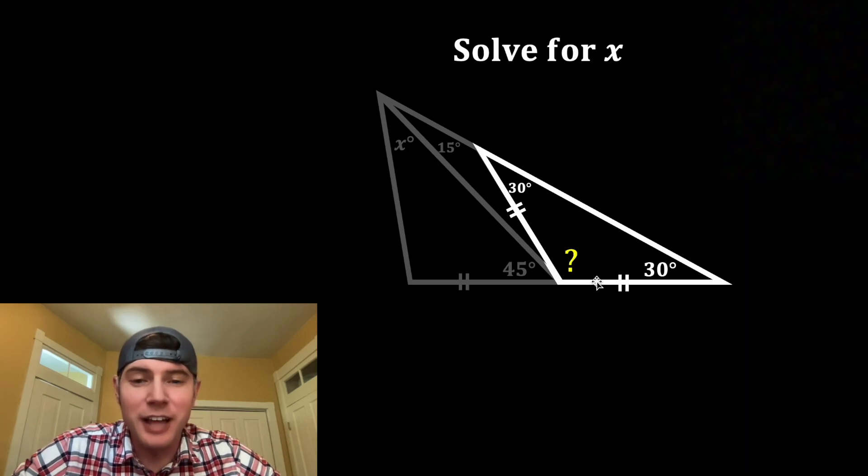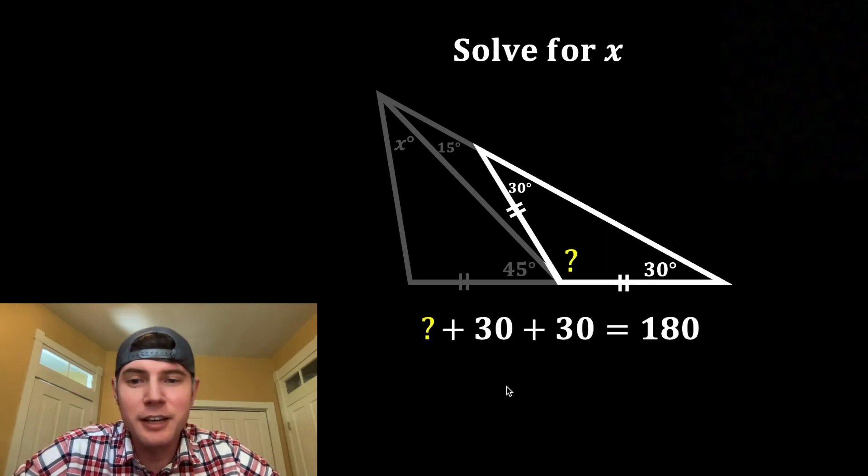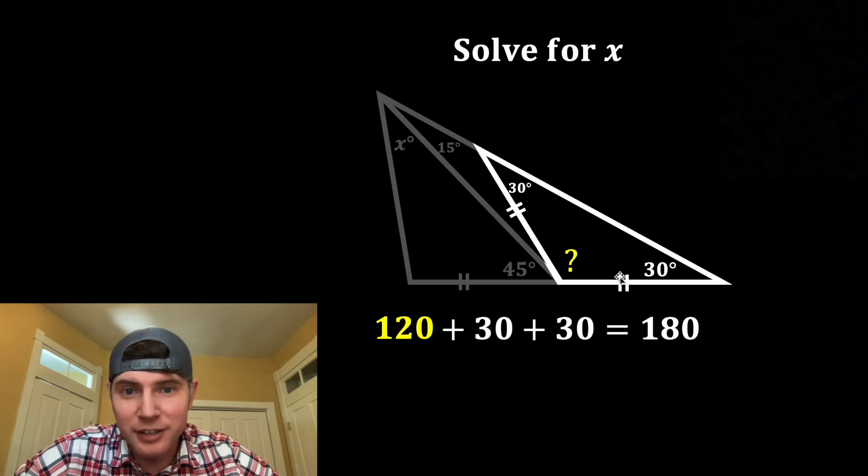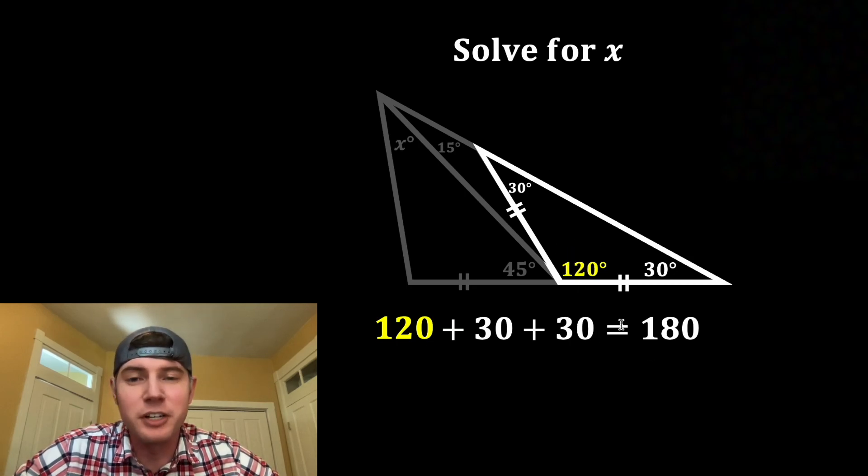And now to find the last angle of the triangle, we can set them all equal to 180, and this will be true for 120. So this angle right here is 120 degrees.